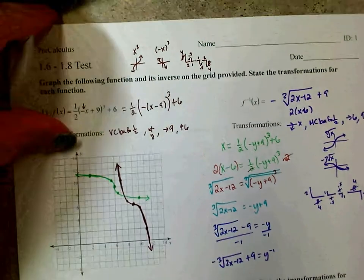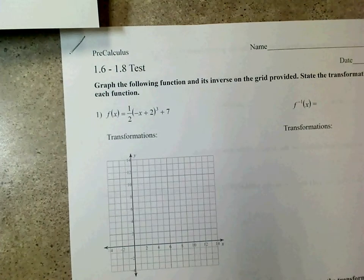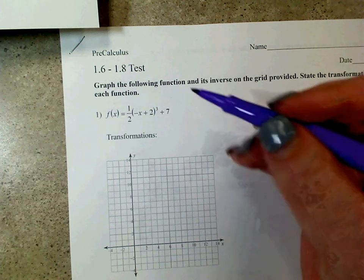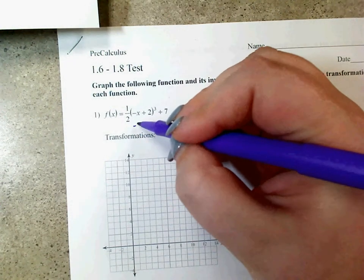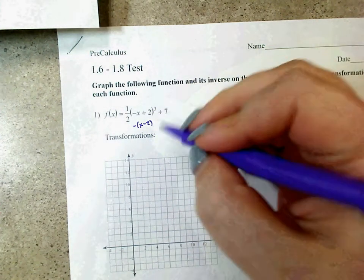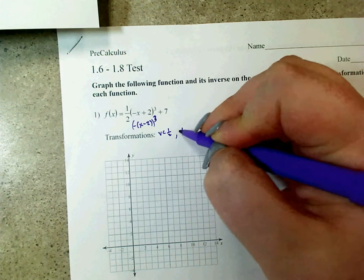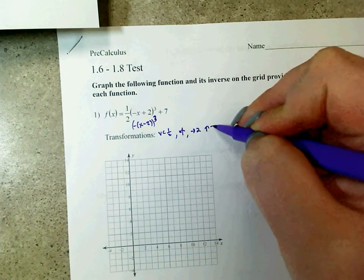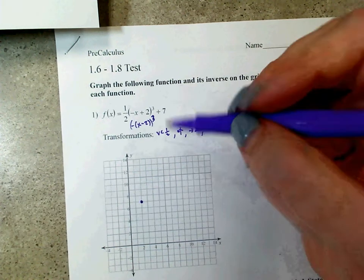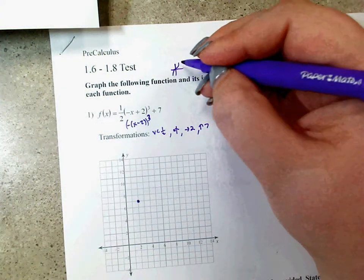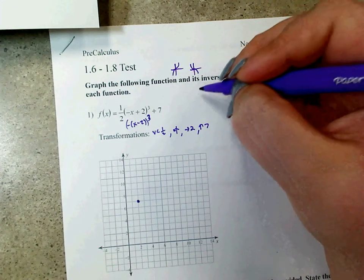Now let me look at number 1 from ID 2. Very similar situation — you've got one half times (negative x plus 2) cubed plus 7. So you want to factor out that negative. You can see it is a vertical compression by a factor of one half, a flip over the y-axis, right 2 and up 7. A cubic function normally looks like this, but I'm flipping it over the y-axis, so now it looks like this.